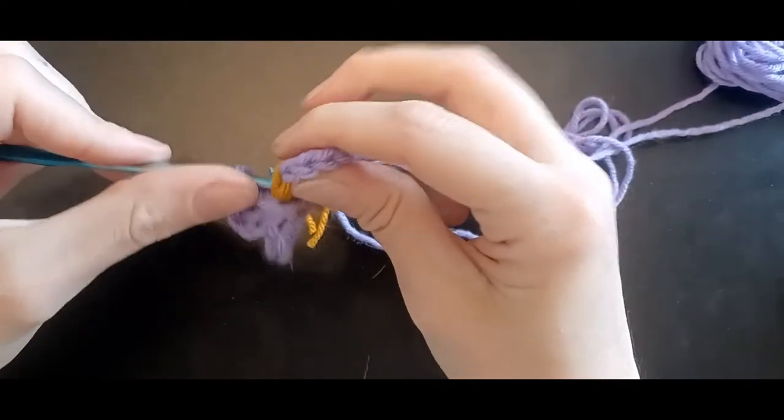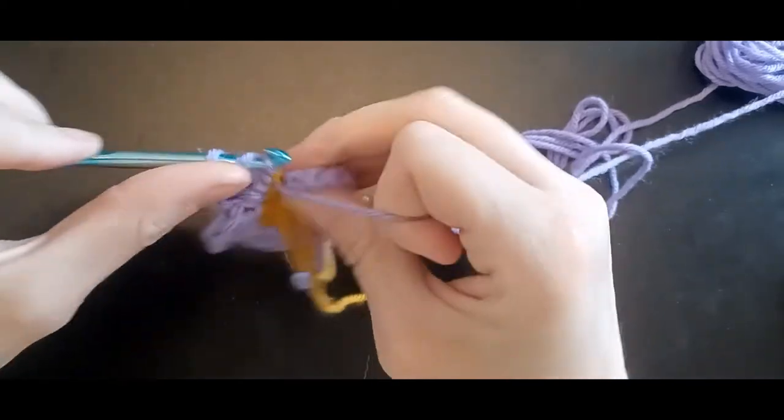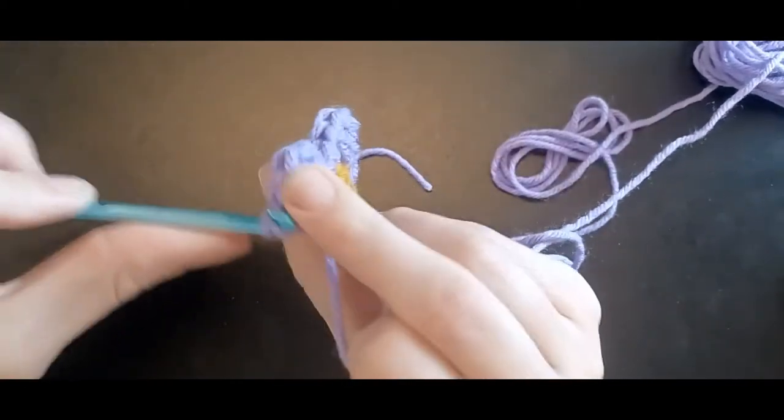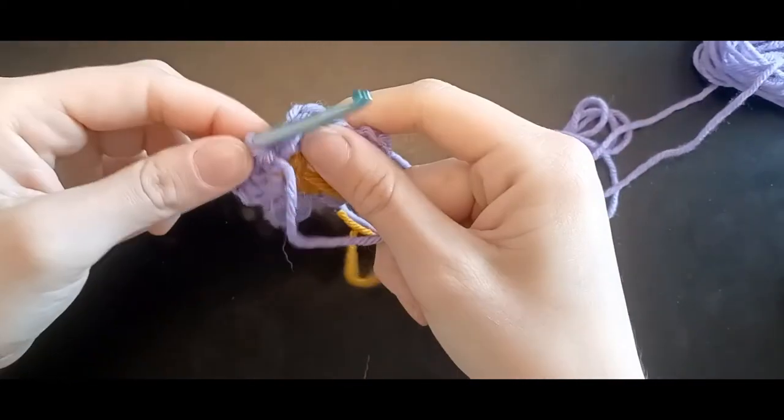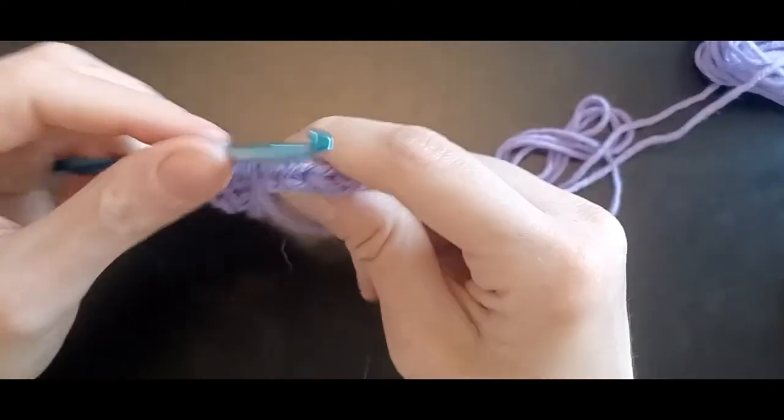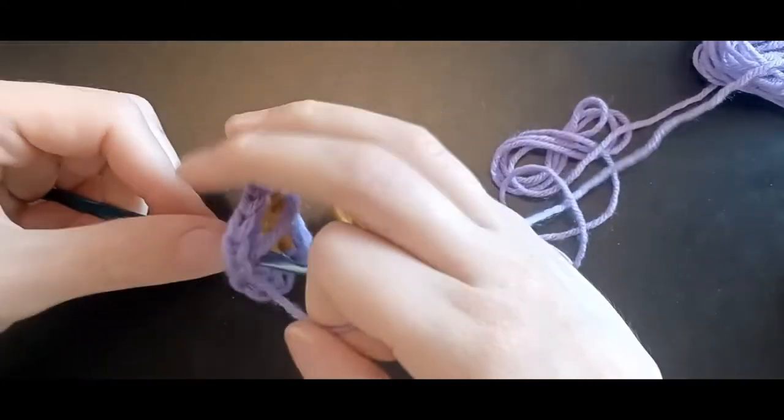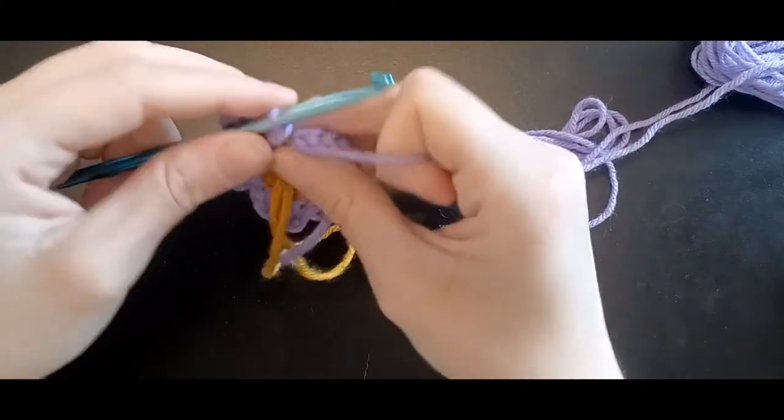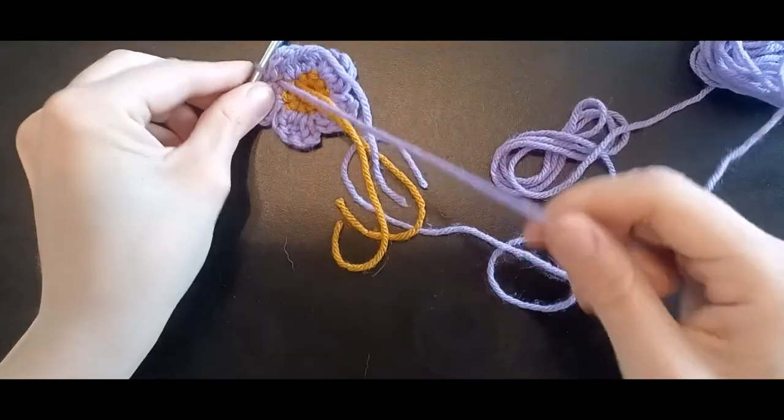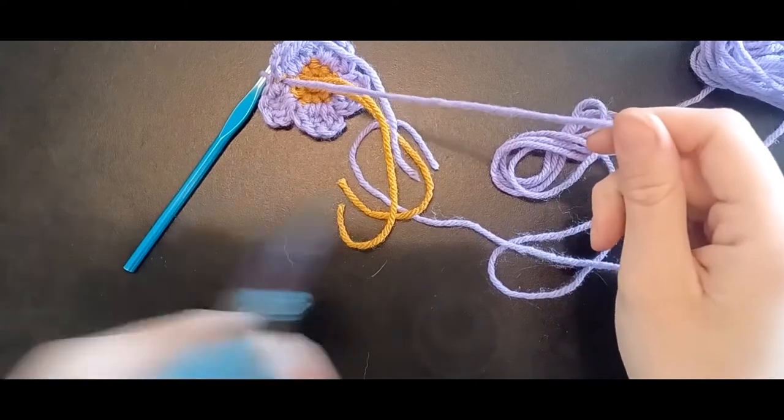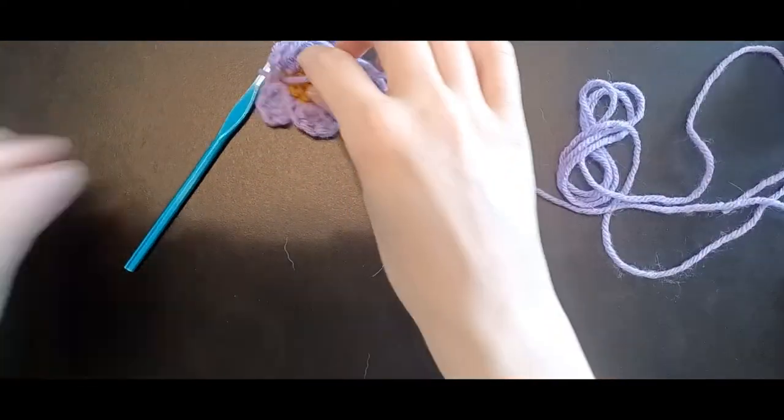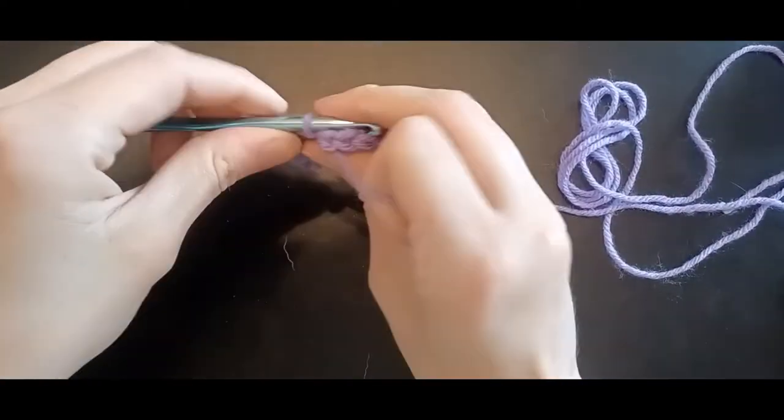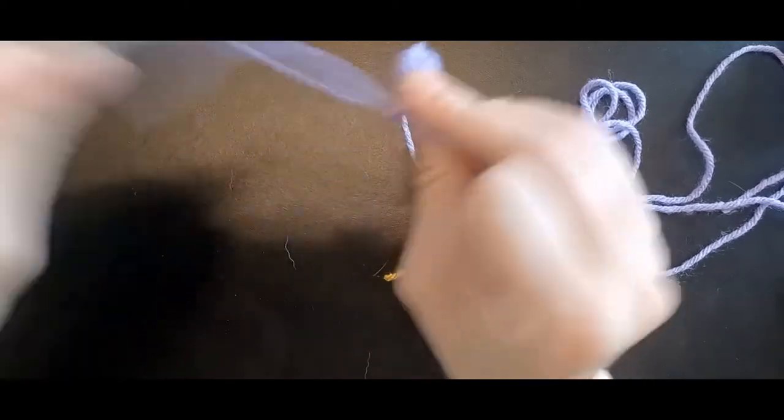And then you're just going to do a little slip to the bottom right there in that same space that you just half doubled into. And cut your string, pull through.